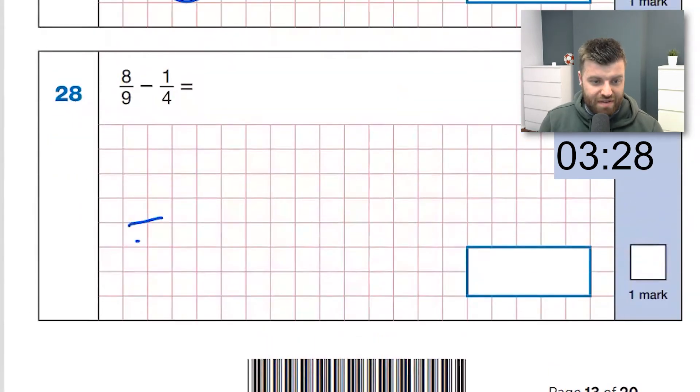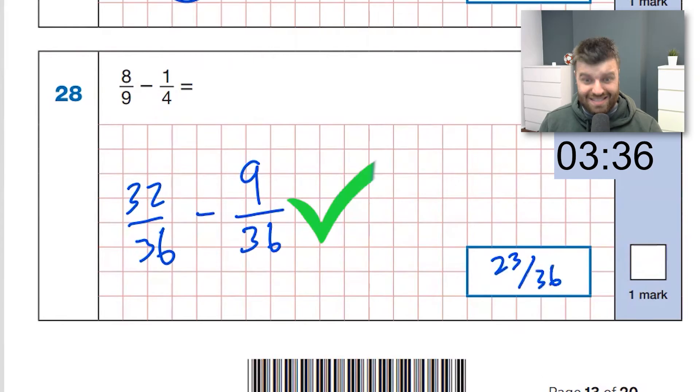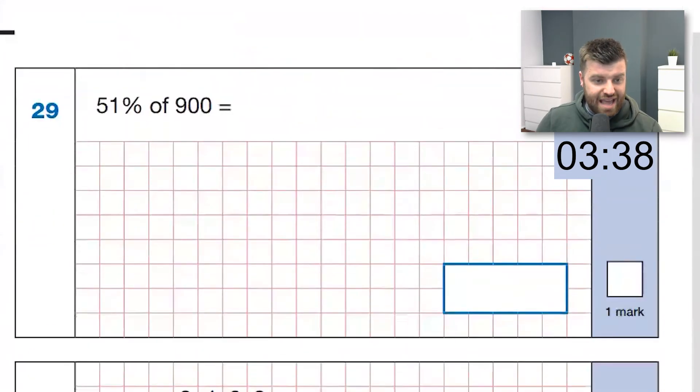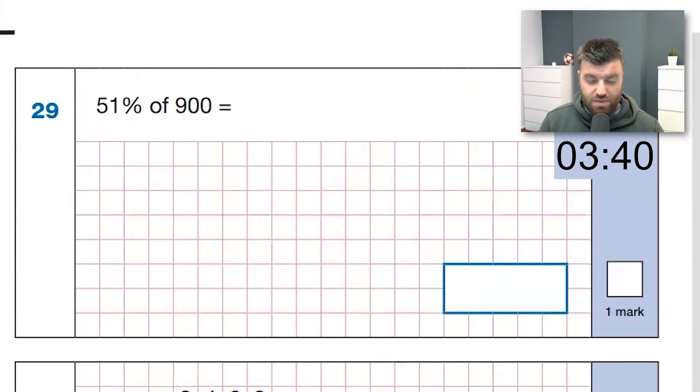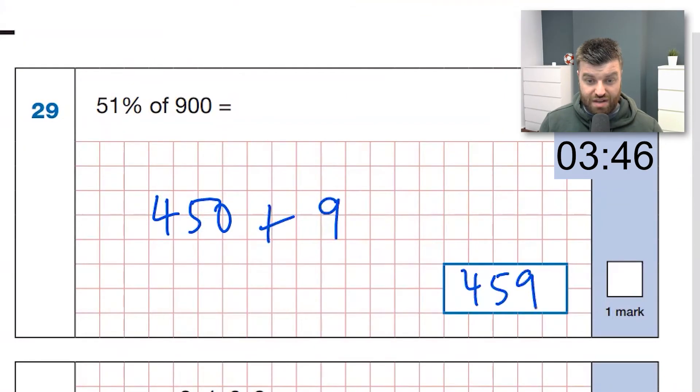28. Let's make them both out of 36. So we're going to have eight fours of 32 over 36. Take away, make it 36 again. Nine out of 36, that's going to be 23, 36. So when we make our denominator the same. Next one, 51%. Well, let's work out half, which is 50%, 450. One percent, which would be nine. Add those together. The answer is 459.